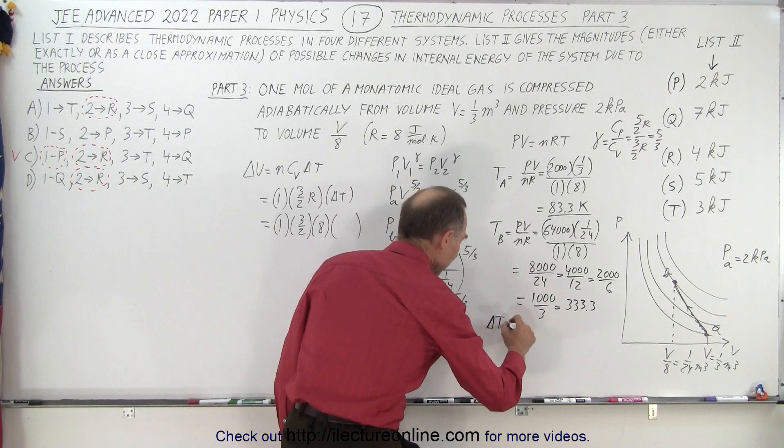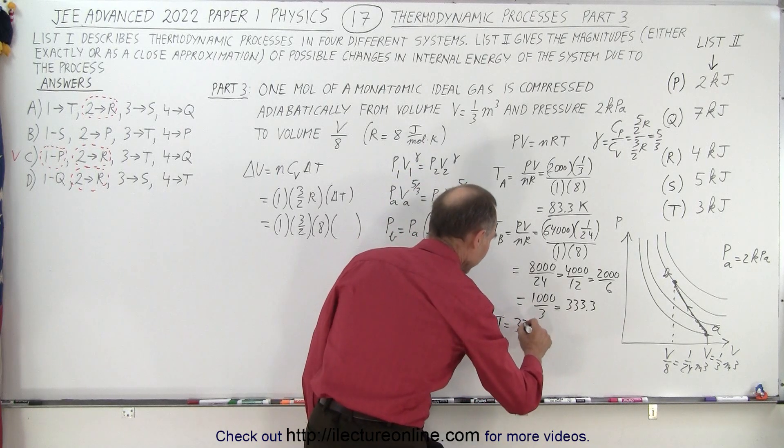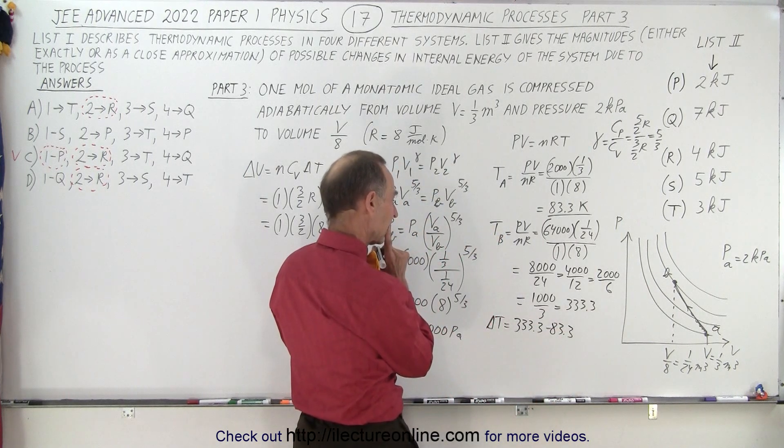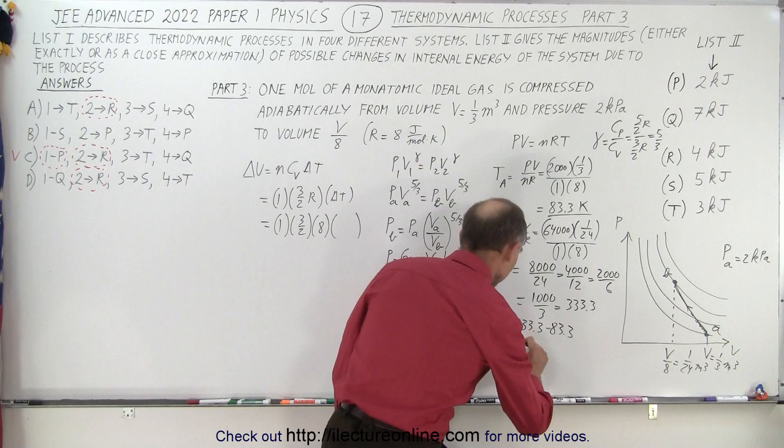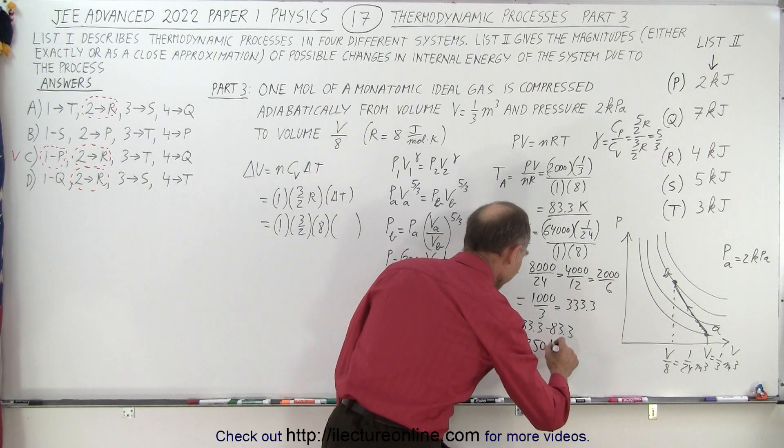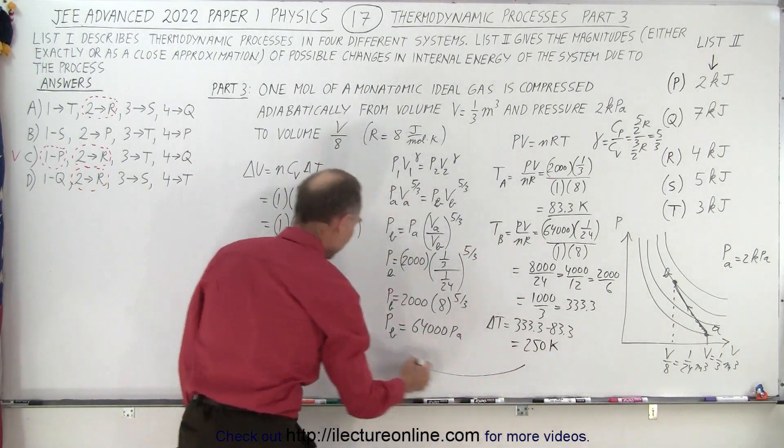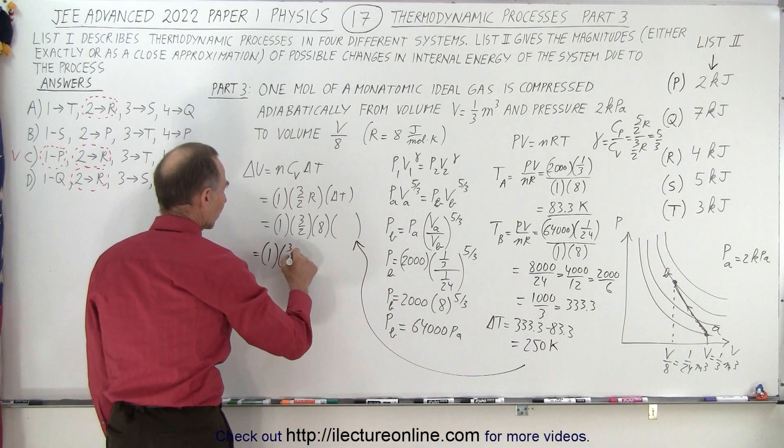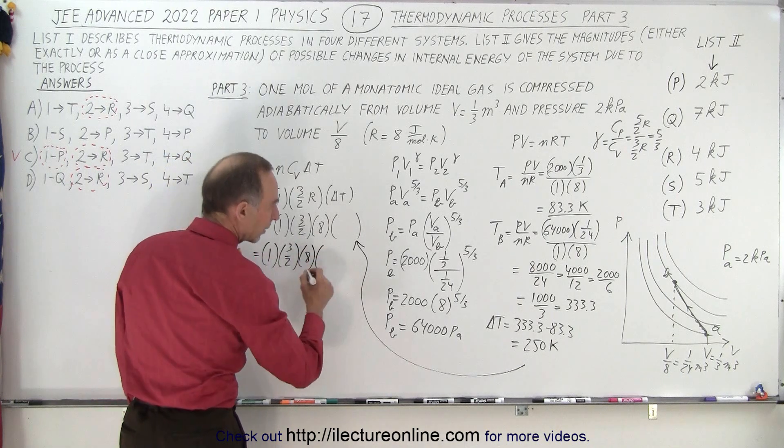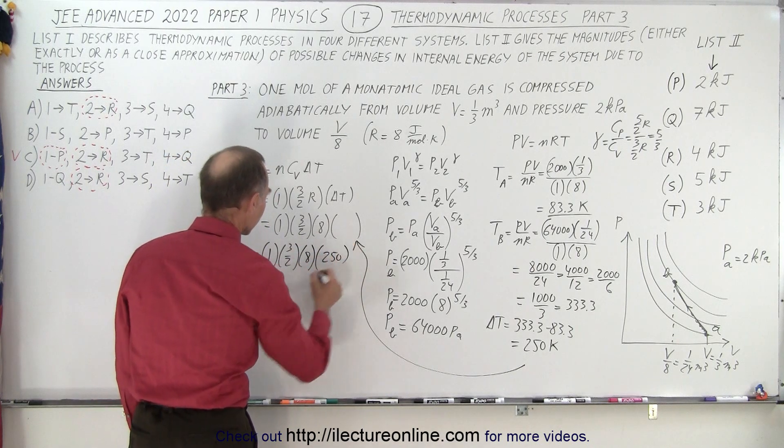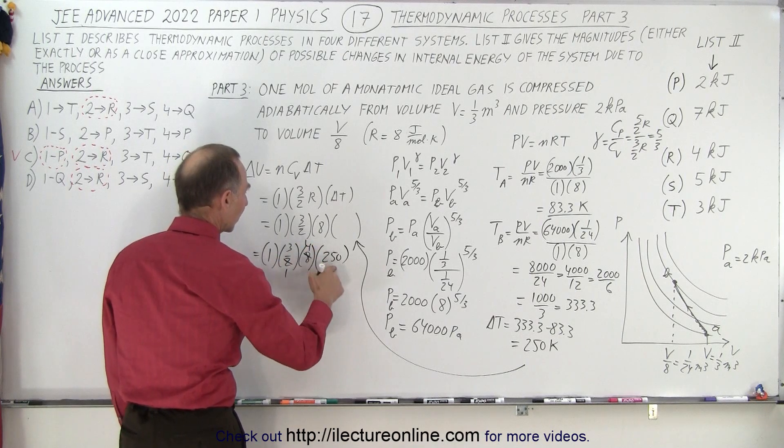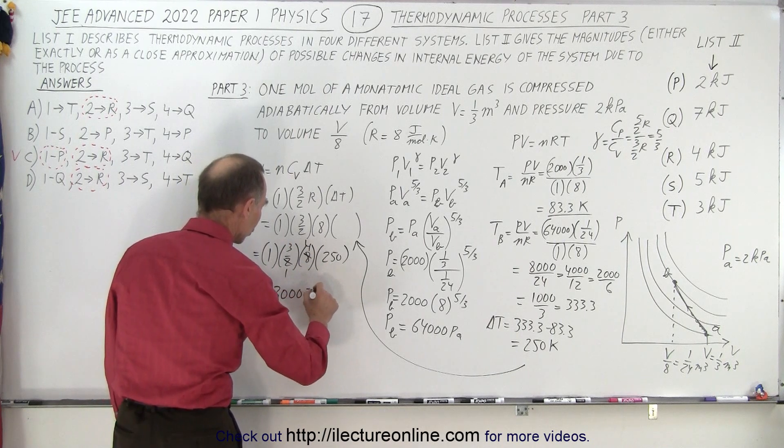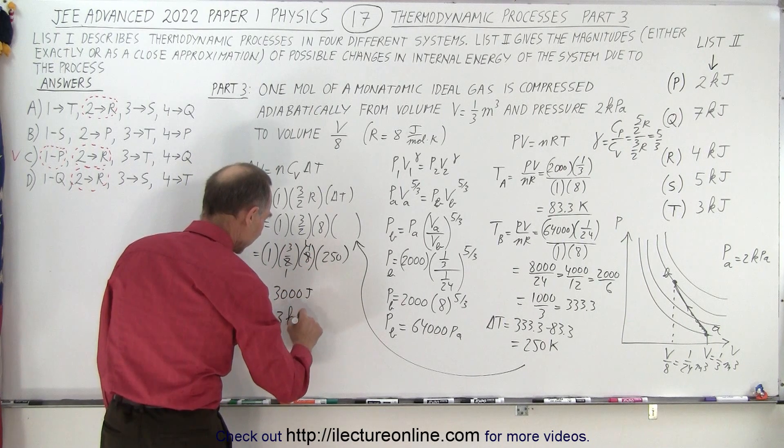Delta T equals the difference, 333.3 minus 83.3, that's 250 Kelvin. Now we can plug that in. This equals 1 times 3 over 2 times 8 times 250. 2 and 8, that becomes 1 and 4. 4 times 250 is 1,000 times 3, which is 3,000 joules or 3 kilojoules.